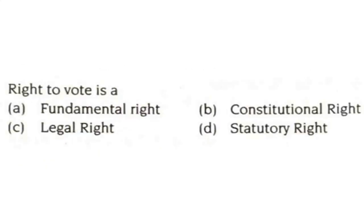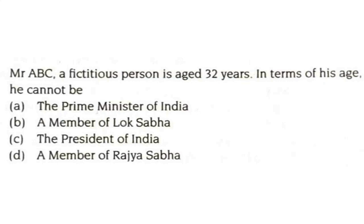Right to vote is a fundamental right, constitutional right, legal right, or statutory right? Under the Representation of People's Act 1951, the right to vote is a statutory right. Mr. ABC, a fictitious person aged 32 years — in terms of his age, he cannot be the president of India, as the minimum age for president is 35 years, under Article 58.